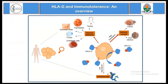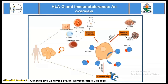In general, human leukocyte antigen G is an immunotolerant molecule — it tends to suppress the normal functioning of immune cells. At its normal physiological condition, it is expressed higher in immune cells. It is an immunotolerant molecule that contributes to the protection of the fetus.